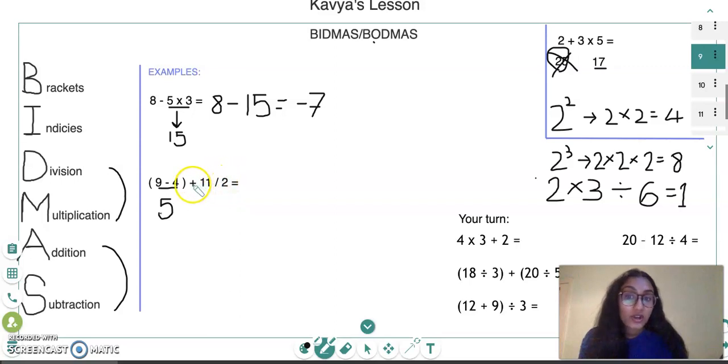9 take away 4 equals 5, and then what we do is look at the other operations. We have a plus sign and we have a divide sign. Here's division and here's addition. You can see division comes before addition, so we have to do the division next. 11 divided by 2 is 5.5. I've got the two answers here and we have a plus, so now I bring down the plus.